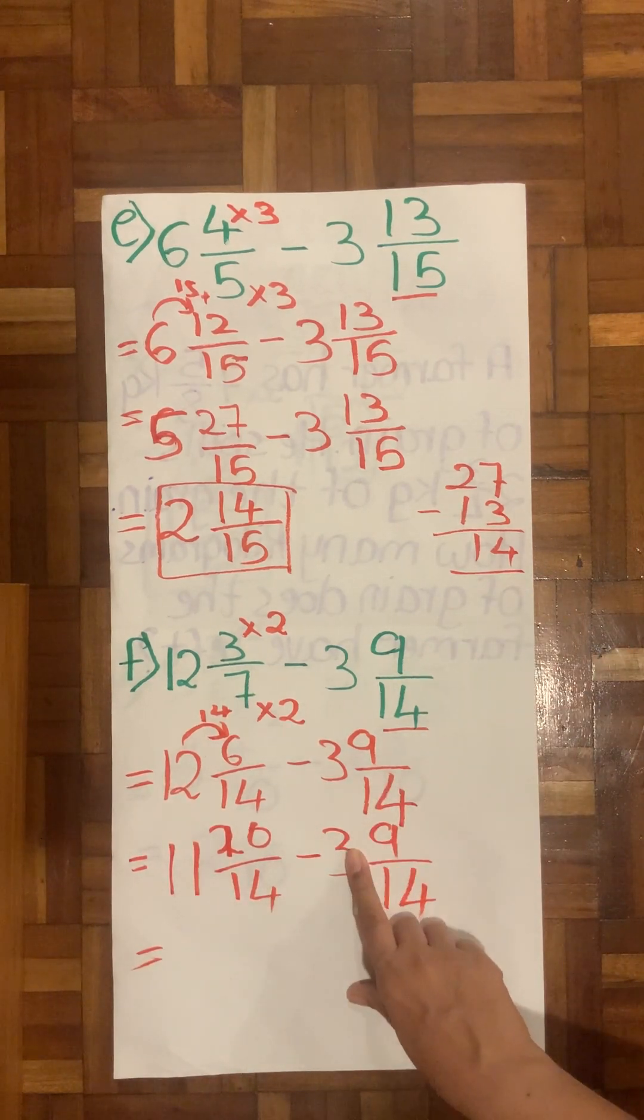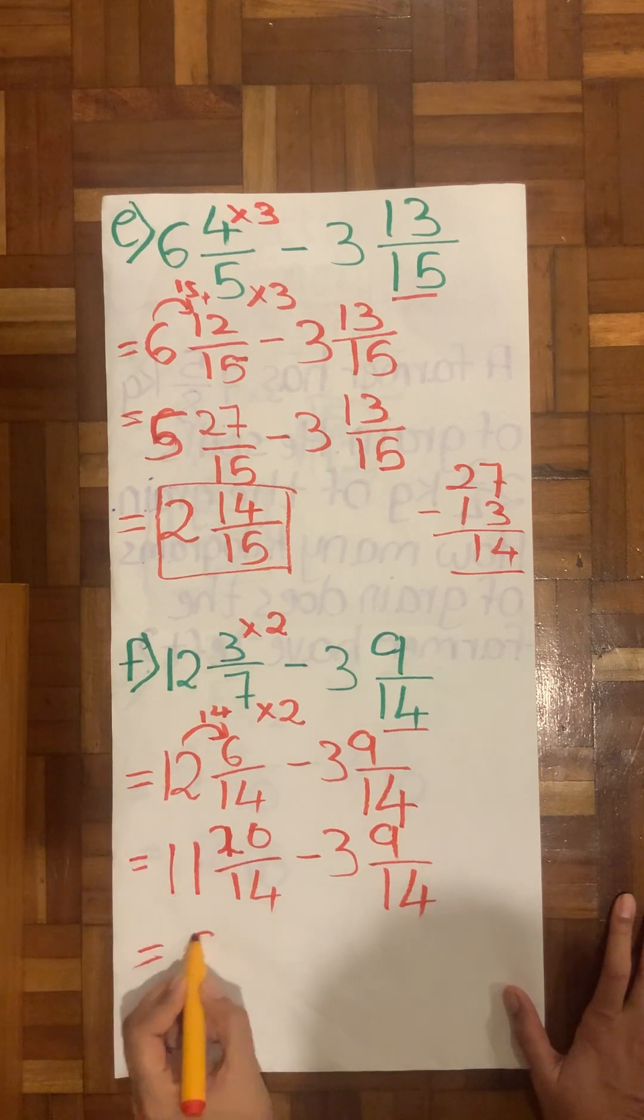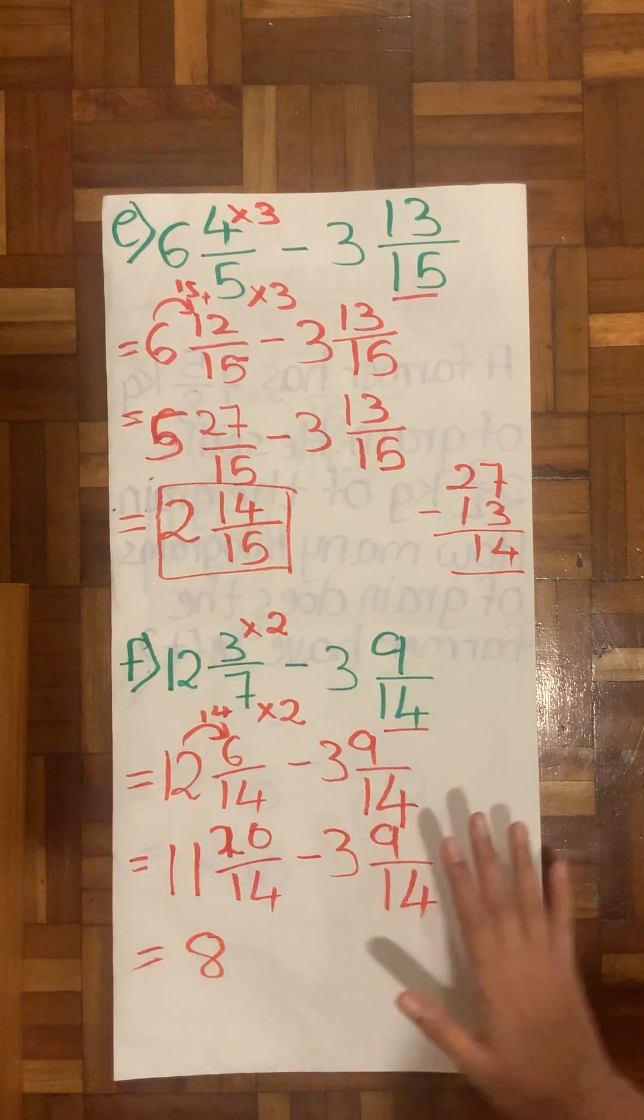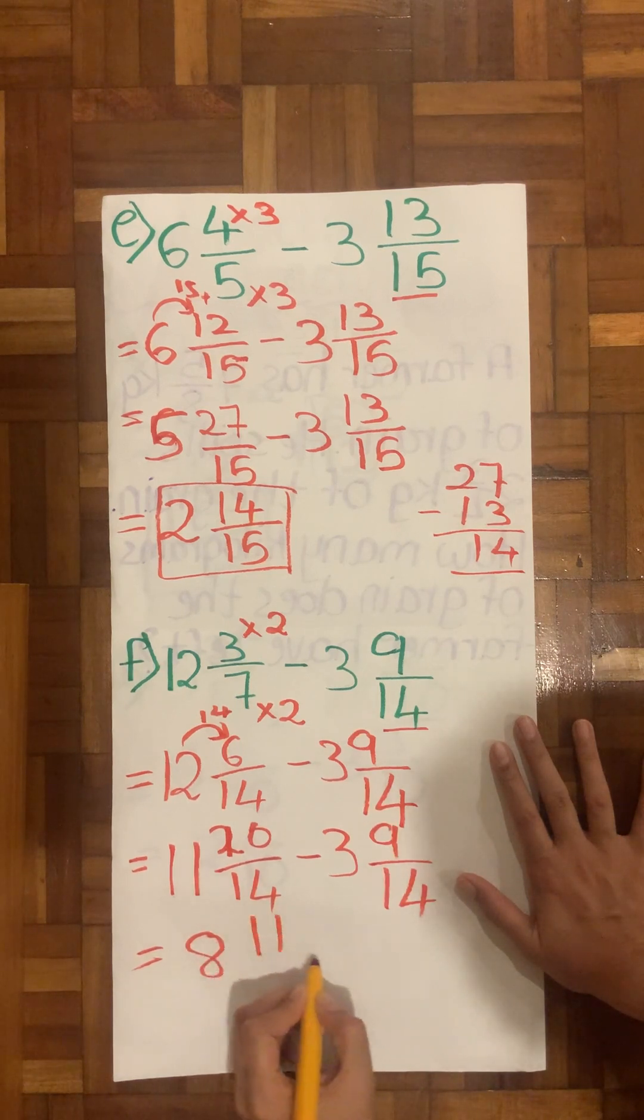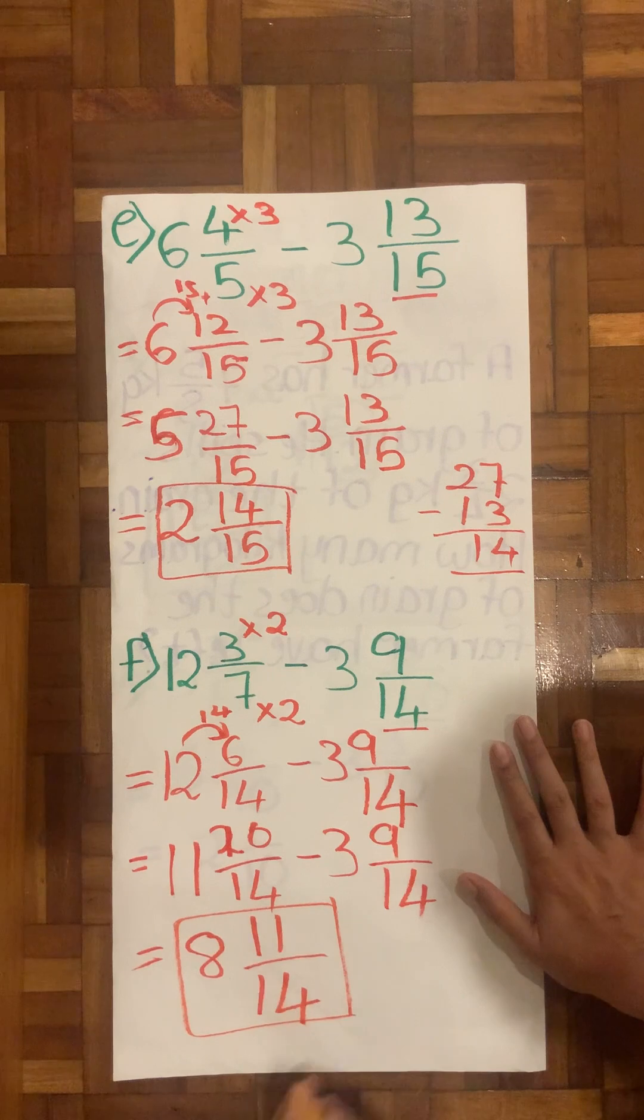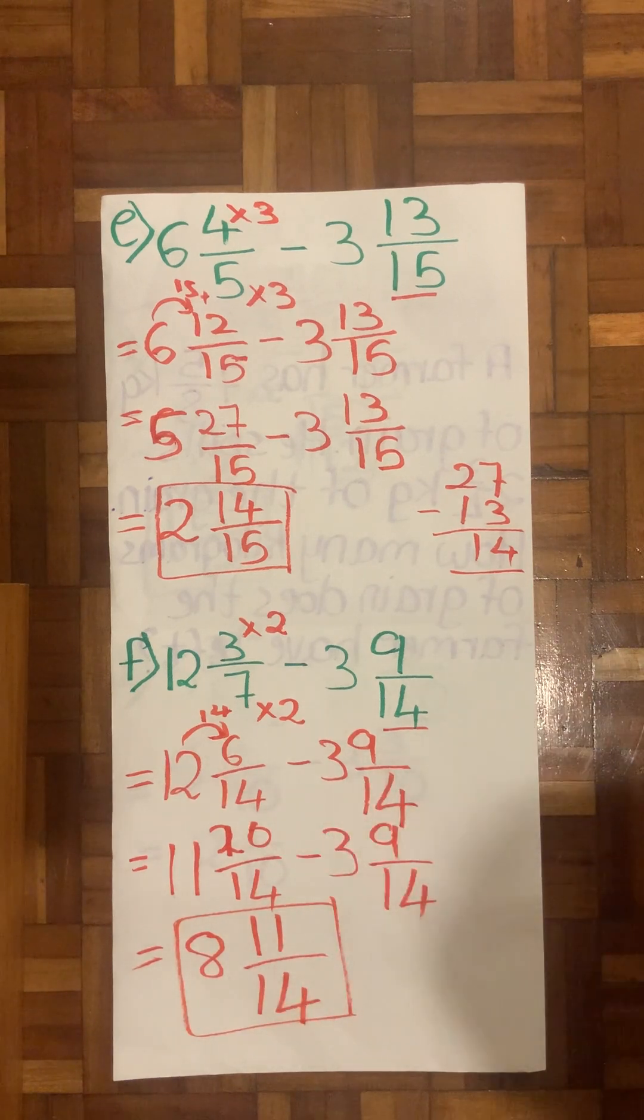Let's deal with the wholes first. So 11 minus 3 we know is 8. 20 minus 9, it's a simple math, we have 11 over 14. So this is how in subtraction this is the other method you can use.